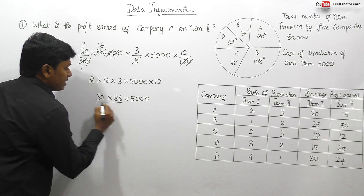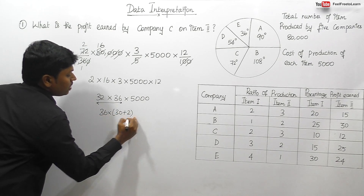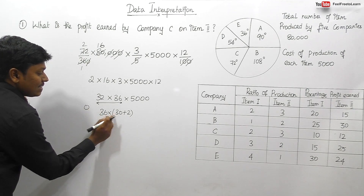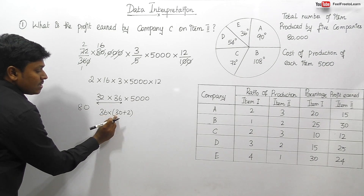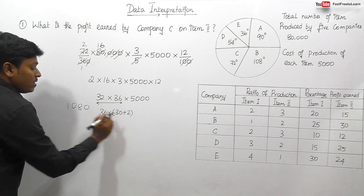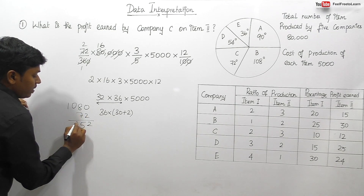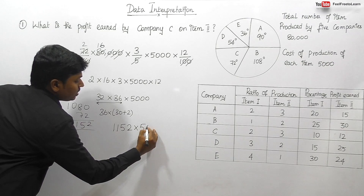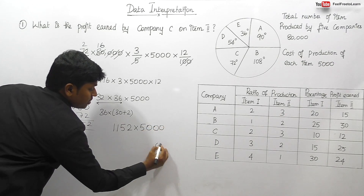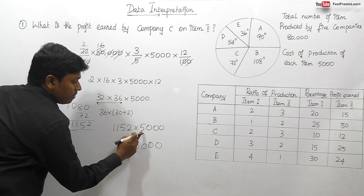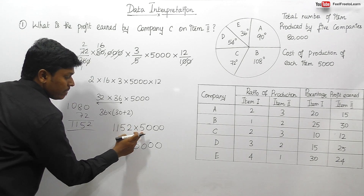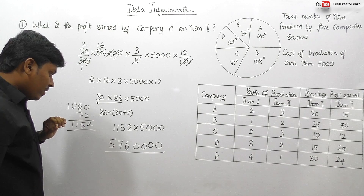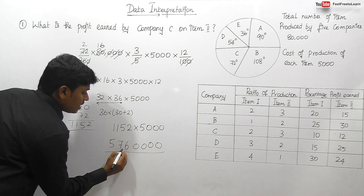To multiply 36 × 32, split 32 as 30 + 2. So 36 × 30 = 1,080 and 36 × 2 = 72; adding gives 1,152. Then multiplying 1,152 × 5,000: place three zeros, and 5 × 1,152 = 5,760. So the result is 57,60,000.